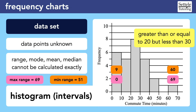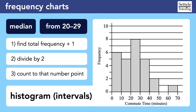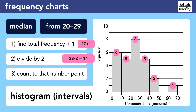Very few SAT questions will involve this type of histogram, so don't worry too much about it. Nevertheless, let's use it one more time to find the median using an alternative method. When a histogram has intervals, the best we can do is find the interval that contains the median. We start by finding the total number of values — the sum of frequencies — which is 27, then add 1 to get 28, and divide by 2 to get 14. The last step is to count data points until we reach the 14th value using cumulative frequencies. The first column contains 6 data points; adding the second column's 5 gives 11 cumulative points. Adding the third column gives 19 total, meaning we passed the 14th data point somewhere in that third column, so the median is between 20 and 29.